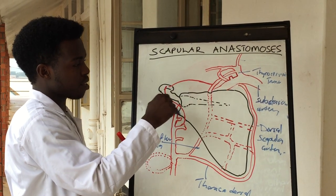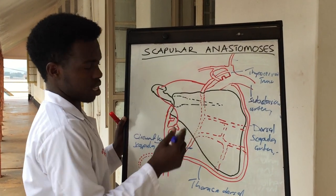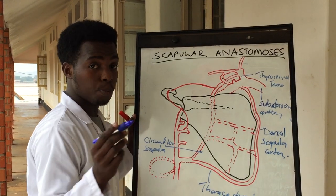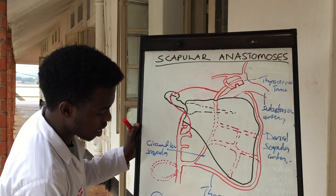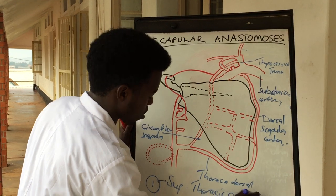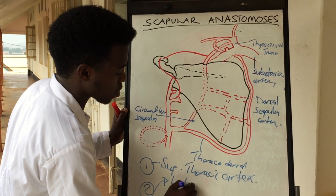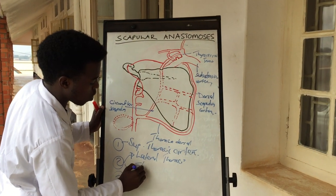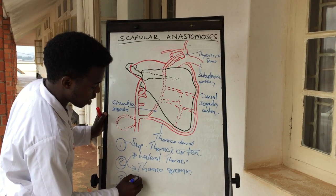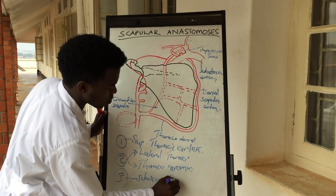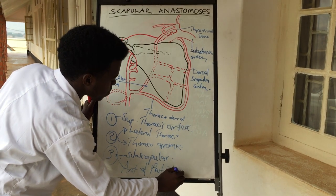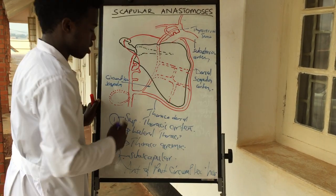At the acromion process, several arteries supply it and make an anastomosis. The axillary artery is divided into three parts by the pectoralis minor. The first part has one branch: the superior thoracic artery. The second part has two branches: the lateral thoracic and the thoracoacromial. The third part has three arteries: the subscapular, and the anterior and posterior circumflex humeral.